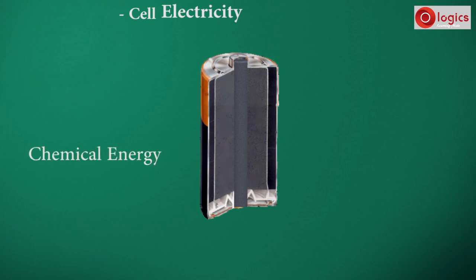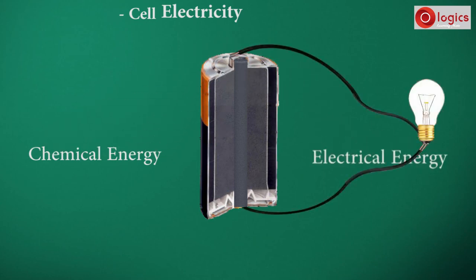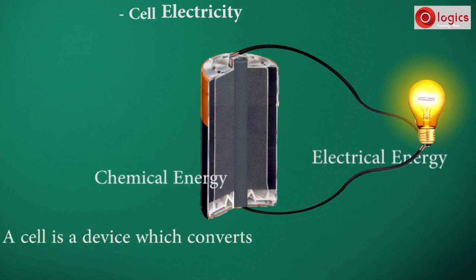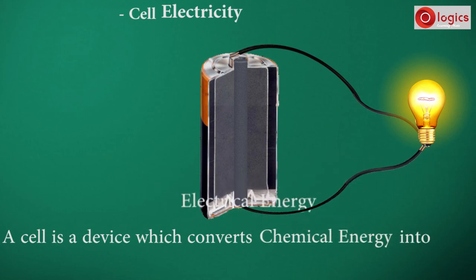This chemical energy is converted into electrical energy, which makes the bulb turn on. Therefore, a cell is a device which converts chemical energy into electrical energy.